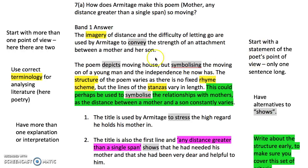This also does another job for us: start with a statement of the poet's point of view - this is what Armitage is trying to convey. That is an A-star grade technique. Then we get to the next paragraph: the poem depicts moving house but symbolizes the moving on of a young man and the independence he now has. Again, more than one idea in the sentence.